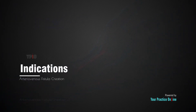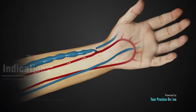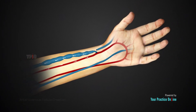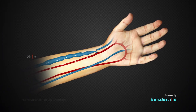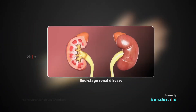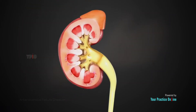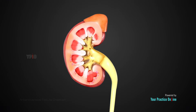An arteriovenous fistula may be indicated for treatment of end-stage renal disease. This is a common condition caused by diabetes or hypertension and is characterized by progressive loss of the kidney's ability to filter and purify the blood.